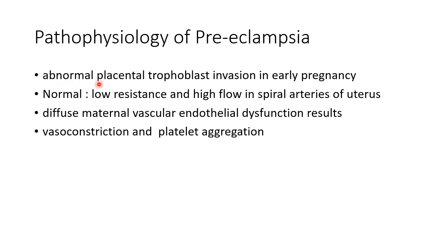Preeclampsia is due to abnormal placental trophoblast invasion in early pregnancy. Normally there is low resistance and high flow in the spiral arteries of the uterus. This does not occur in preeclampsia, leading to diffuse maternal vascular endothelial dysfunction, vasoconstriction, and platelet aggregation.